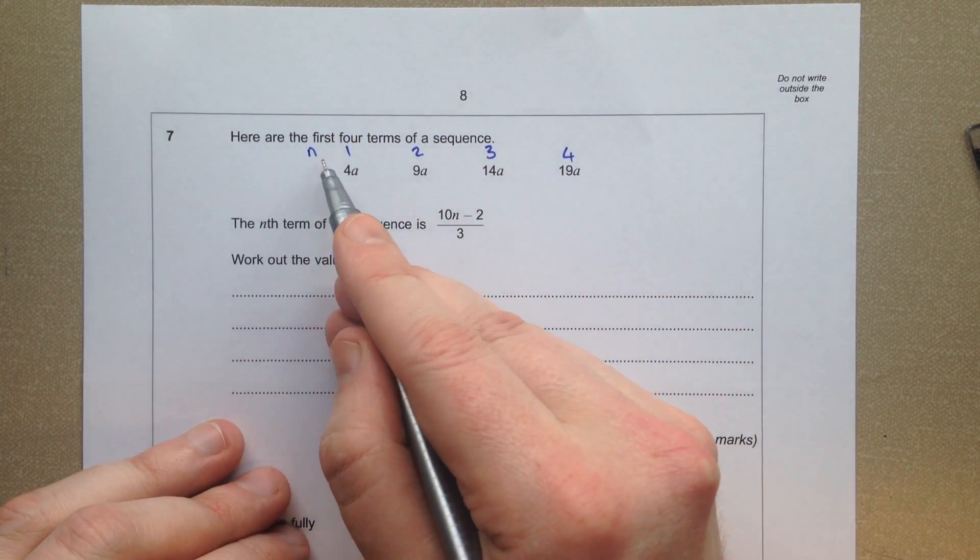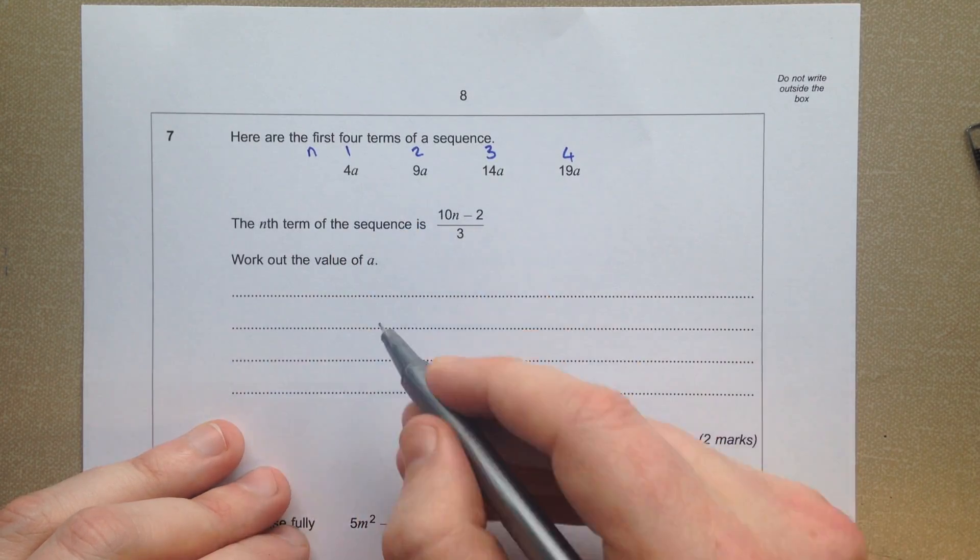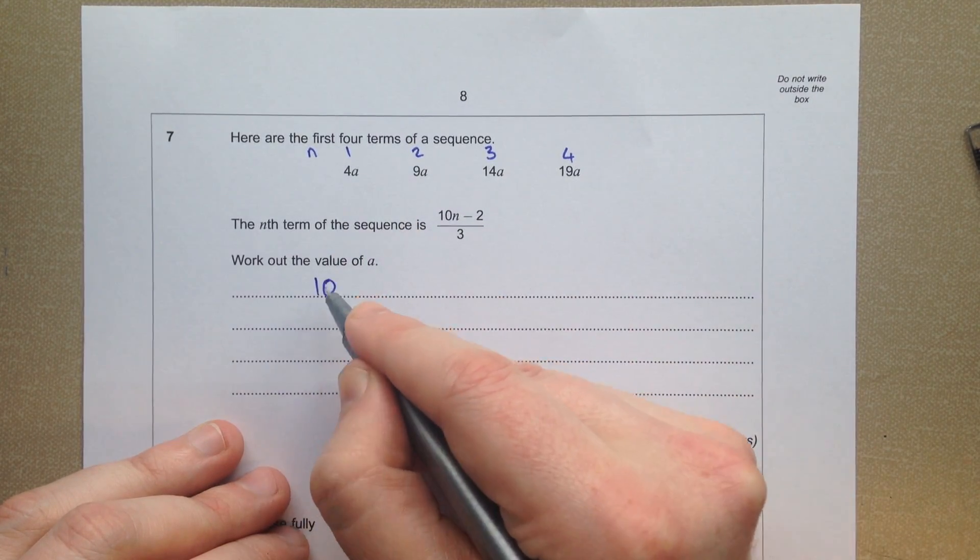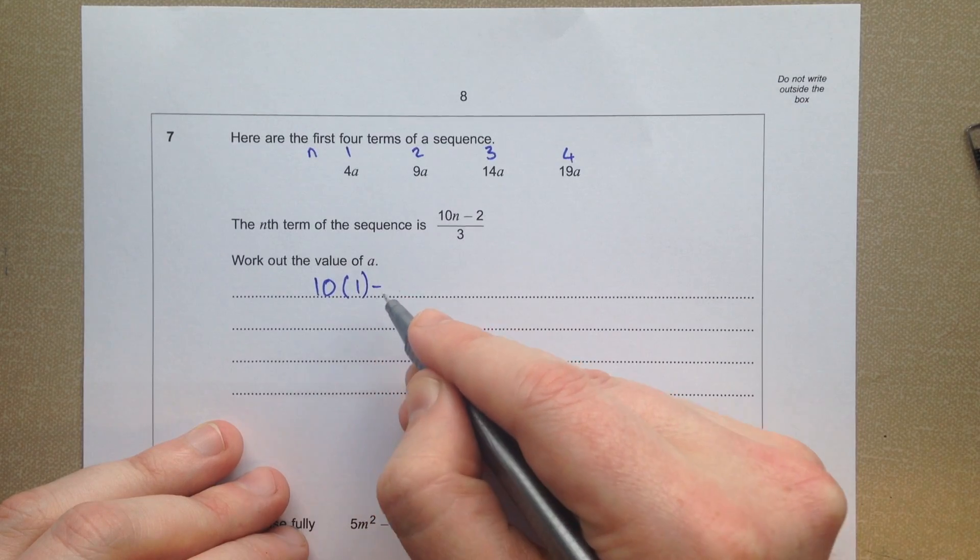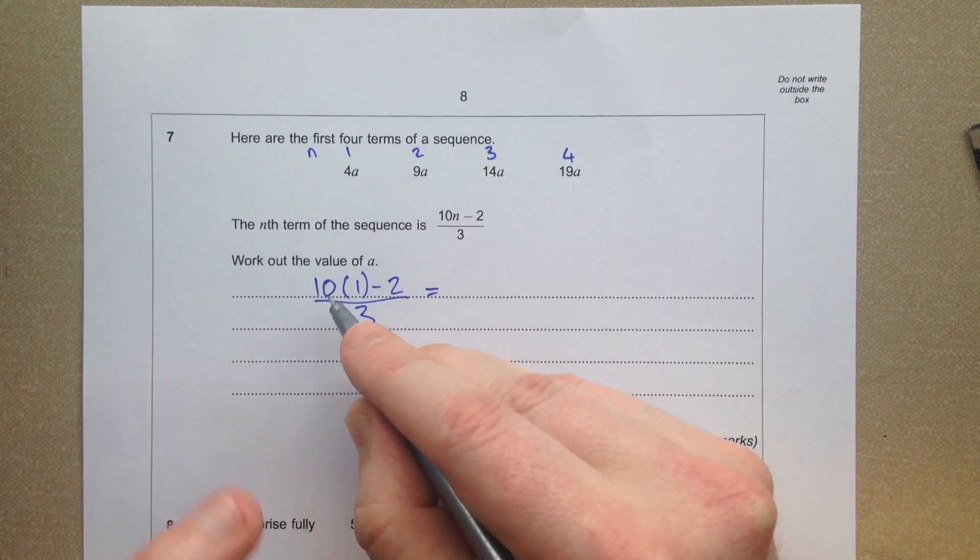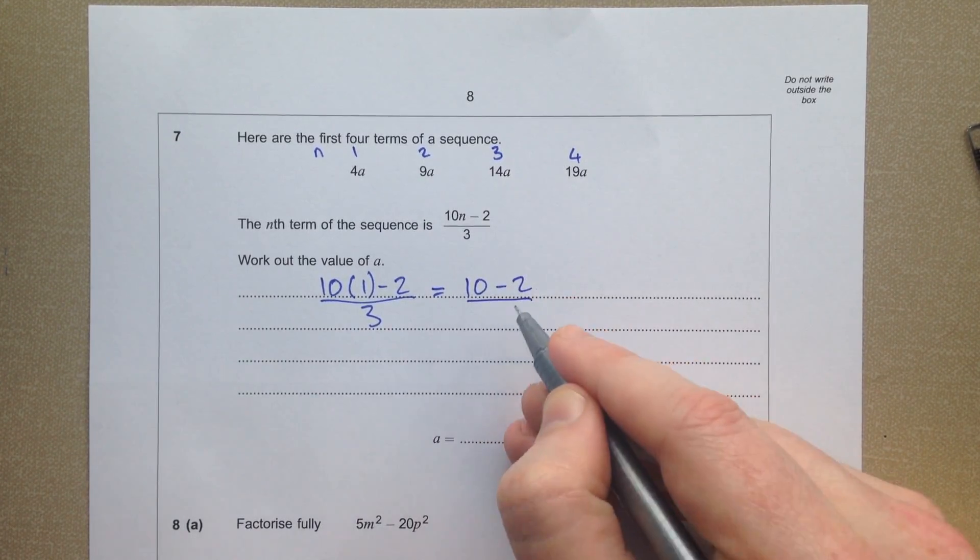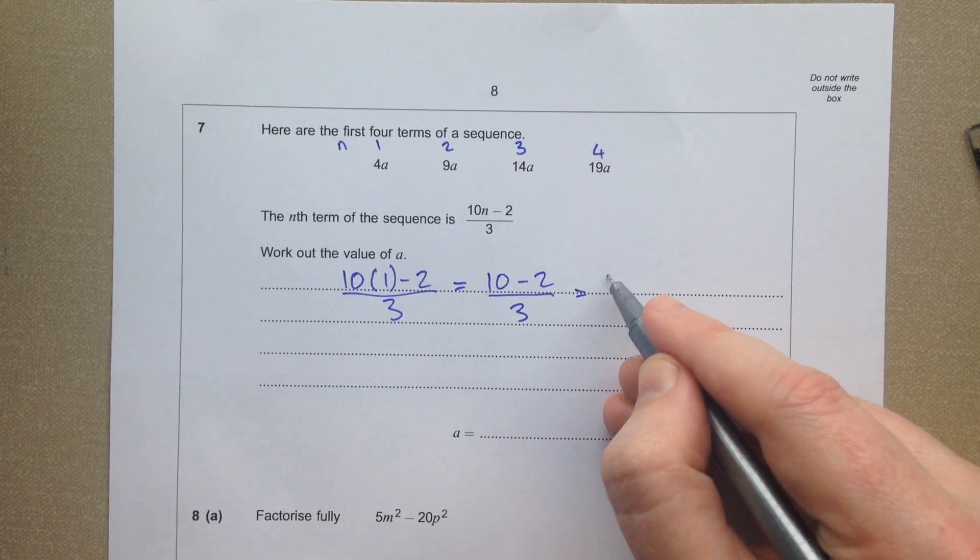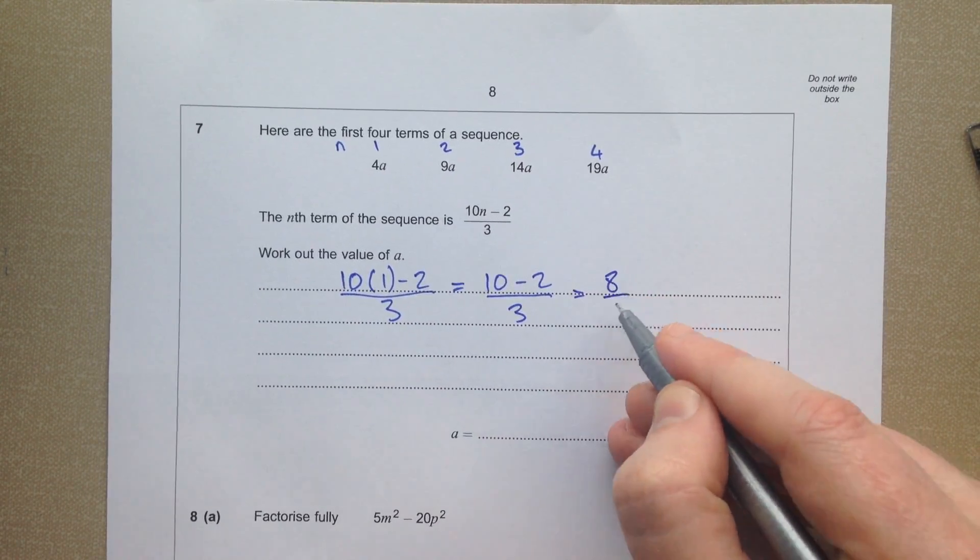So if I take in our first value, n is 1, and plug that into there, 10 lots of 1 take away 2 over 3. 10 lots of 1 is 10, so that's 10 take away 2 divided by 3, that's 8 divided by 3.